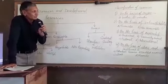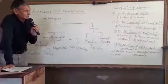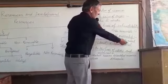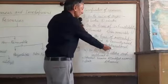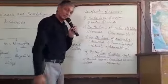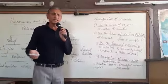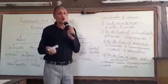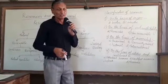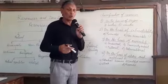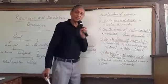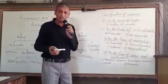When we talk about the classification of resources on the basis of their ownership, they can be put into four categories: individual resources, community resources, national, and international. Talking about individual resources, you must have seen in your village there are people who own land and things. All those resources which are owned by individuals are called individual resources — they are privately owned by individuals.